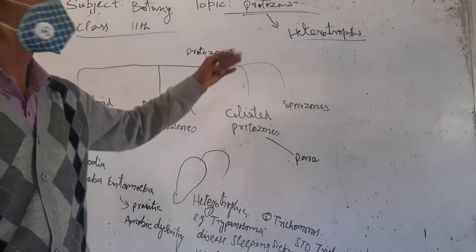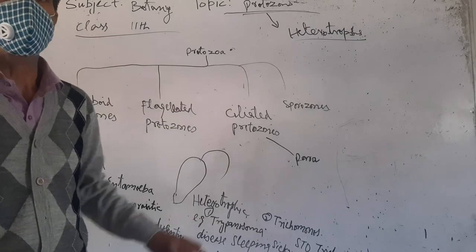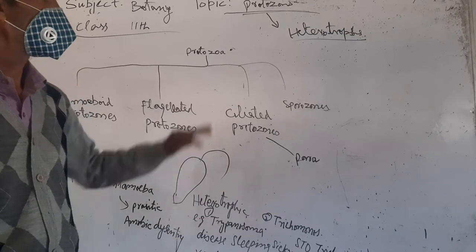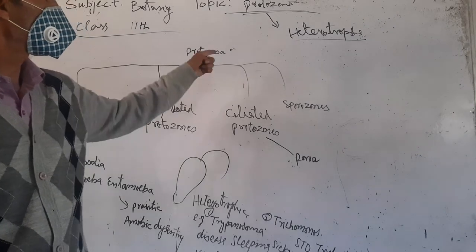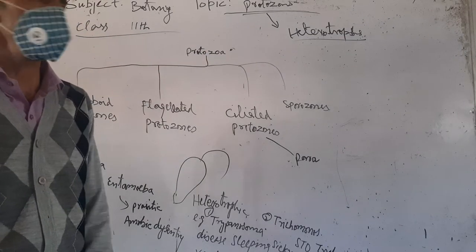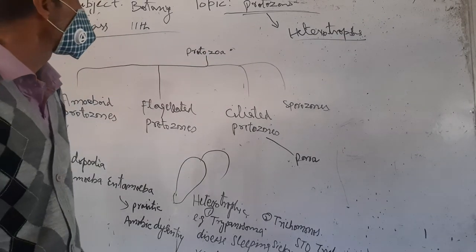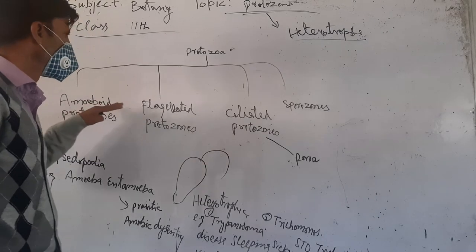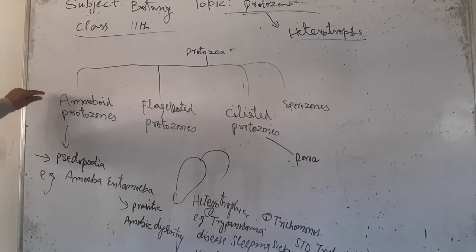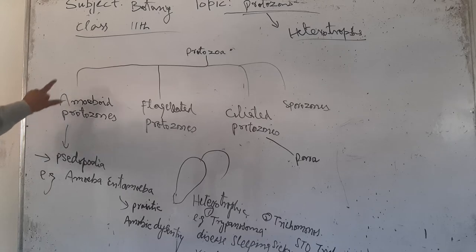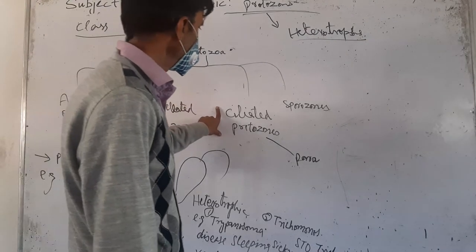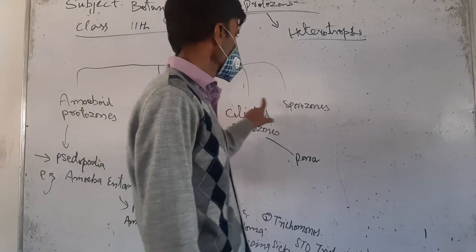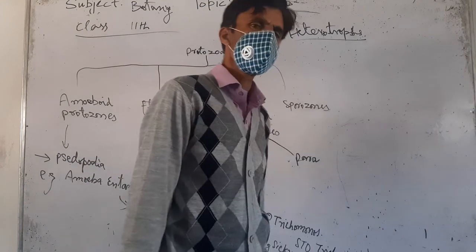Yes, there are some membranous coverings, but almost there is no cell wall. Protozoans are divided into four categories: one is amoeboid protozoans, two is flagellated protozoans, three is ciliated protozoans, and the other is sporozoans.